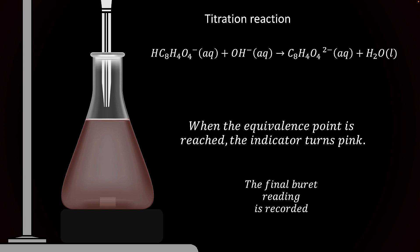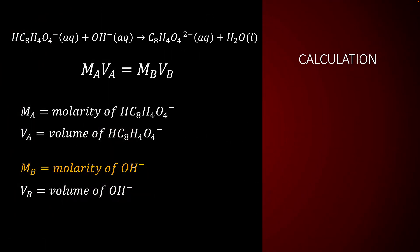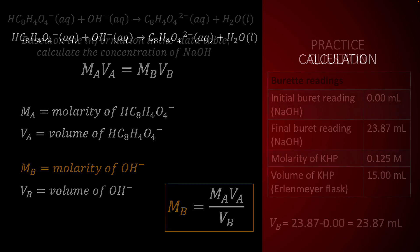The burette is read a second time to determine the amount of sodium hydroxide added. To determine the concentration of the hydroxide solution, we may use the titration formula MAVA equals MBVB. We can solve the titration formula for MB, the molarity of the hydroxide solution, and plug in all the known values to calculate it.